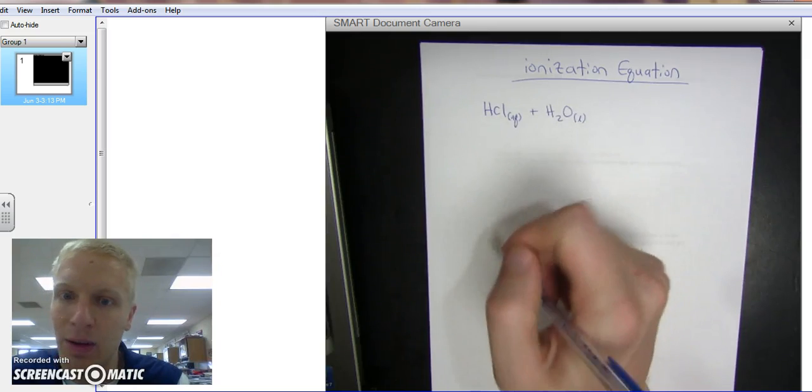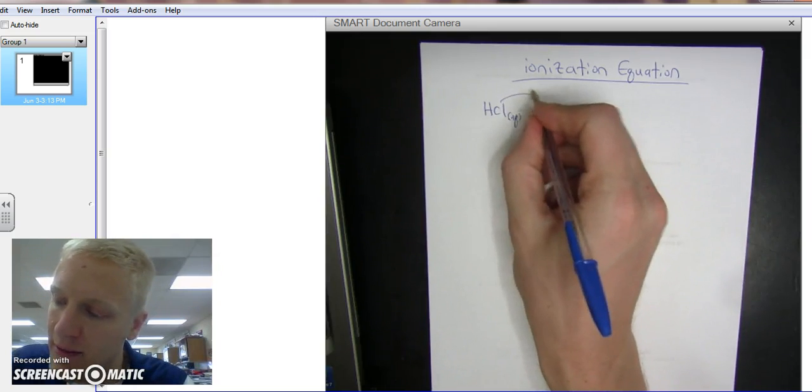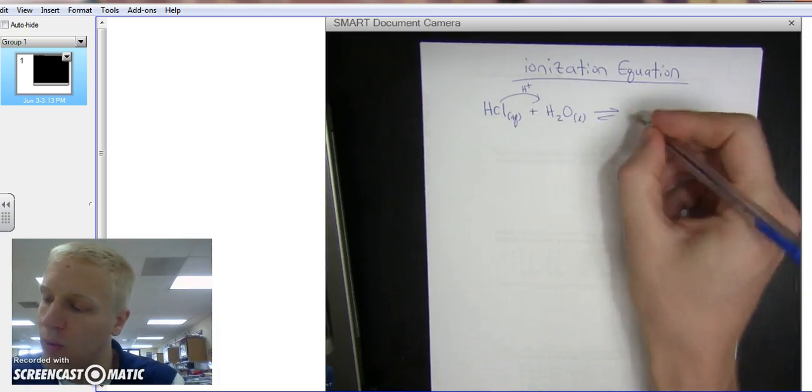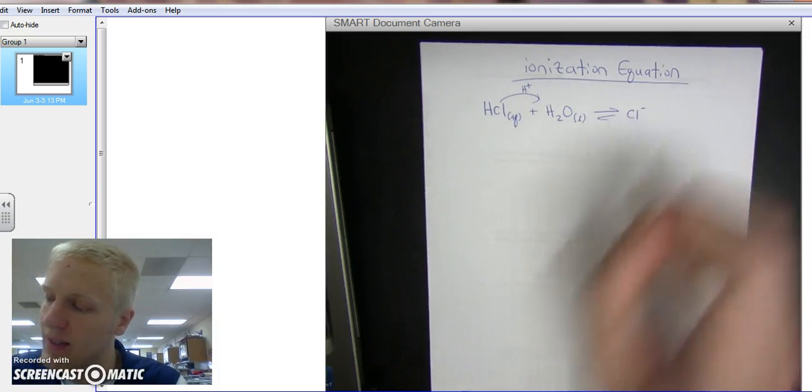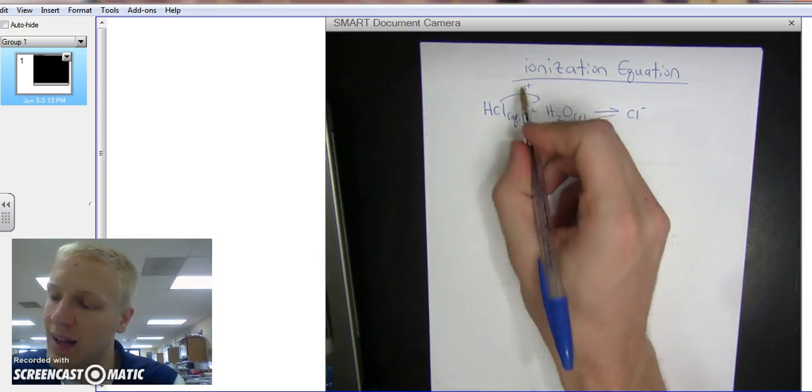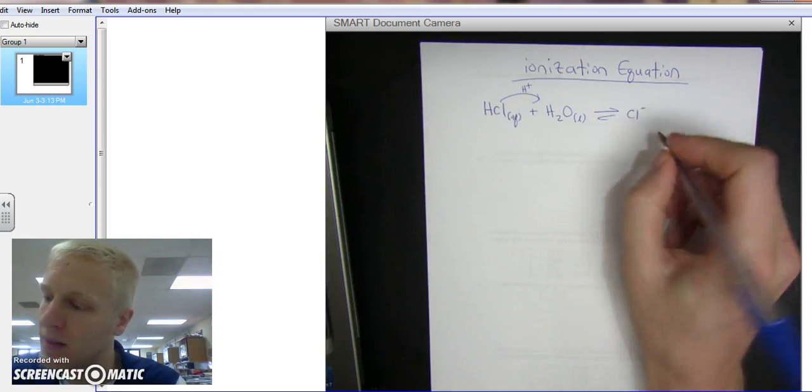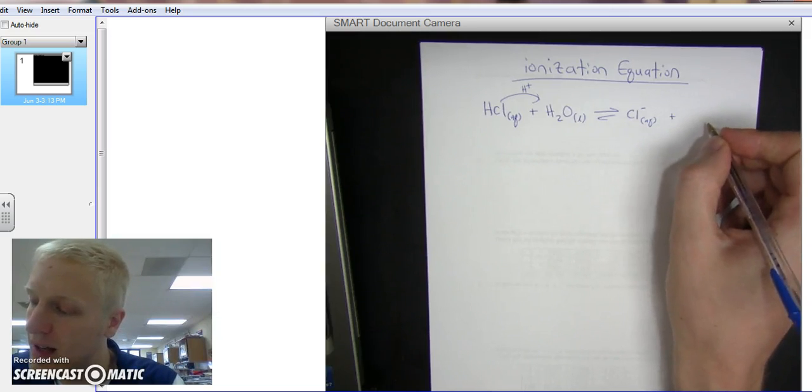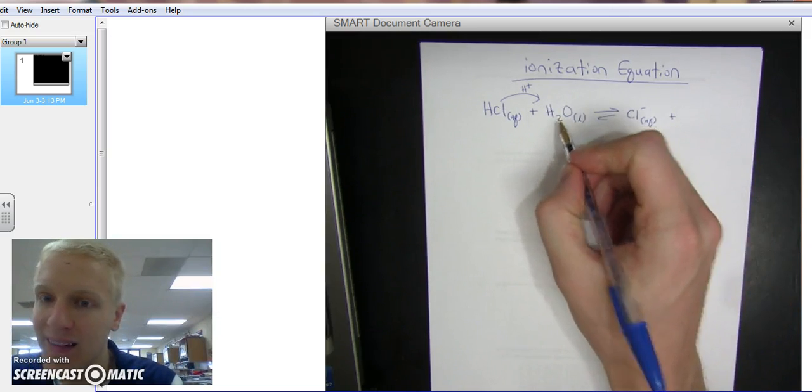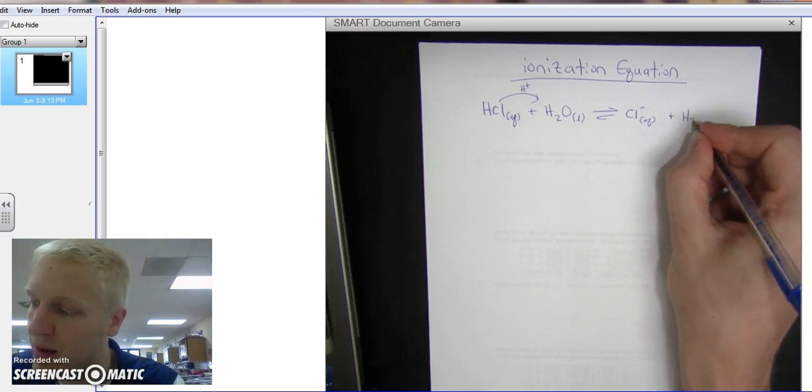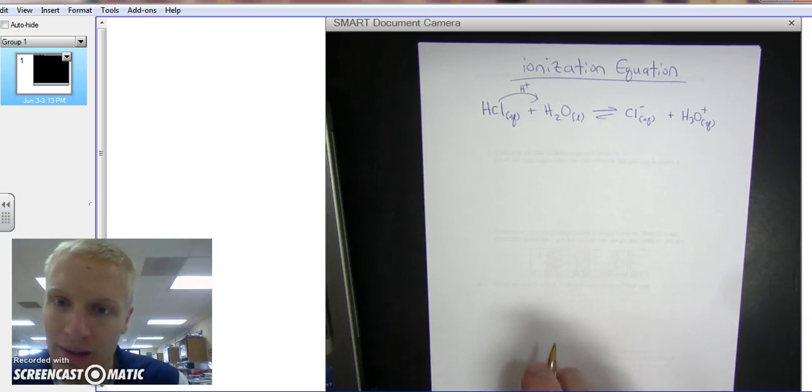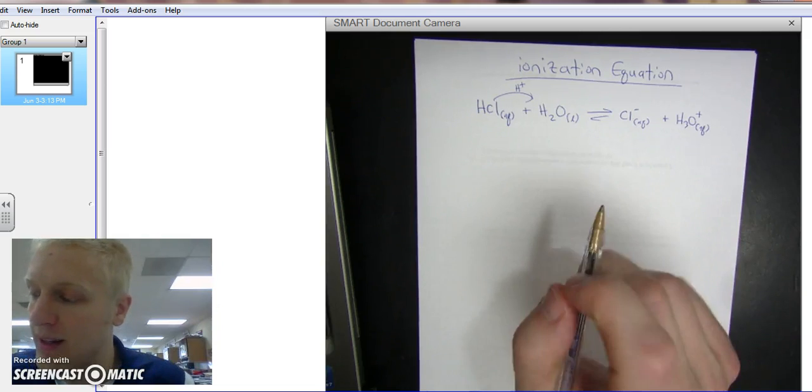So since this is an acid, according to Bronsted and Lowry, it's going to give an H+. So once it gives an H+, it's going to be just a chlorine, and it lost a positive, so now it's minus, and that's aqueous, plus H2O gains an H, so now it's H3O+, and it's also aqueous. And that is the ionization equation for HCl, a monoprotic acid.